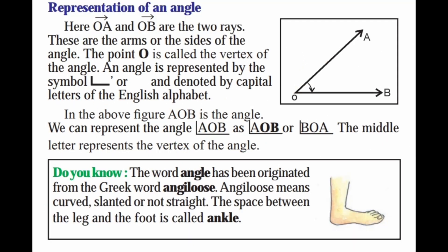Now let's see the representation of an angle. Here, OA and OB are two rays. These are the arms or the sides of the angle. The point O is called the vertex of the angle. An angle is represented by the symbol, this line or a cap, and denoted by capital letters of the English alphabet. The above figure AOB is an angle. We can represent the angle AOB as angle AOB or angle BOA. The middle letter represents the vertex of the angle.